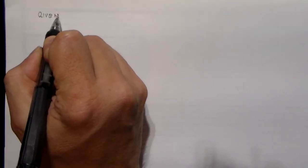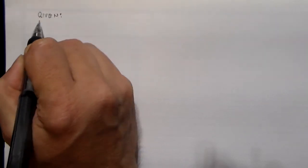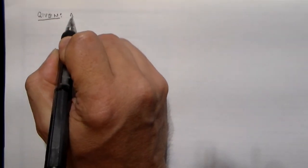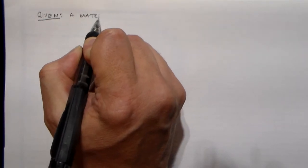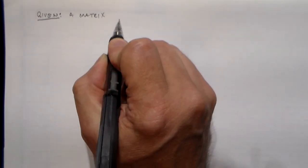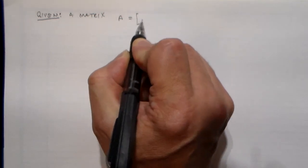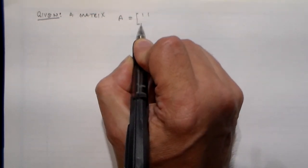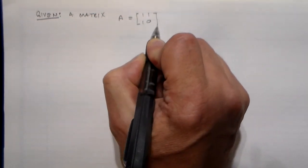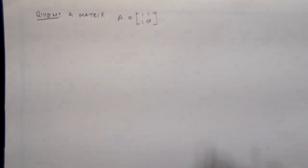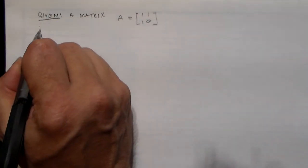Sometimes mathematicians invent really annoying ways to help you out, and usually the reason why they invent these really annoying ways is because the other way that you might want to do it is even worse. So one of these things is going to be this method for finding the power of a matrix.